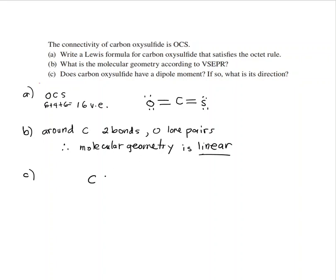Carbon-oxygen: oxygen is more electronegative. Carbon-sulfur: sulfur is just a tiny bit more electronegative, so there's a very tiny dipole going that way.